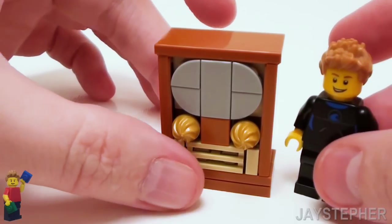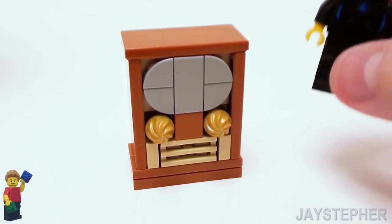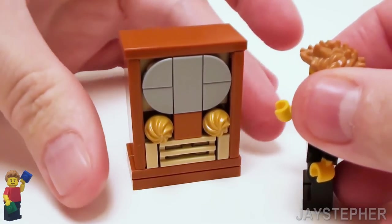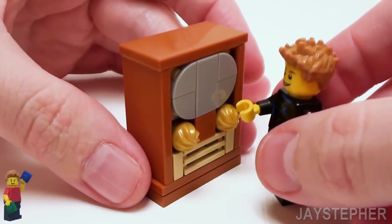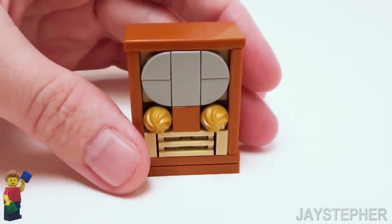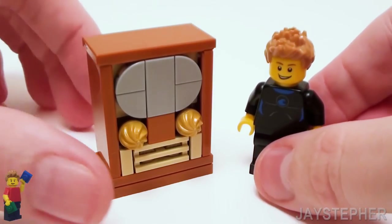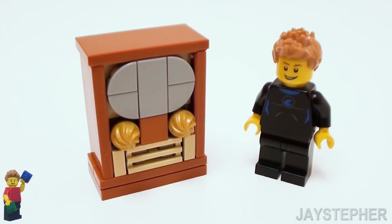It is the right height for minifigures. Those older televisions were pretty big. Of course the only disadvantage is Jay is going to have to change the channels manually. This television will look great in any 1950s Lego home or as an accessory piece.